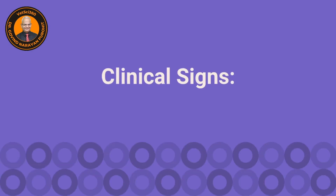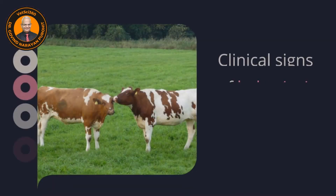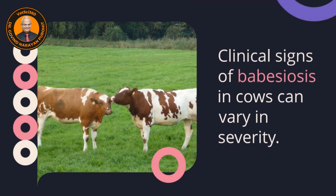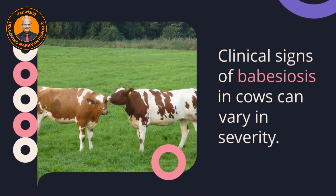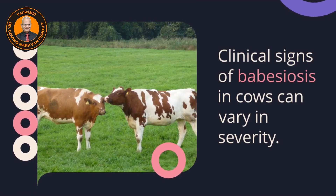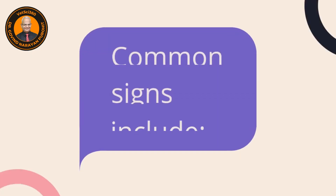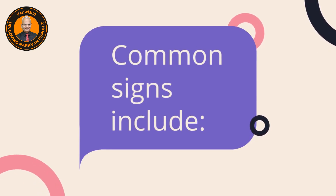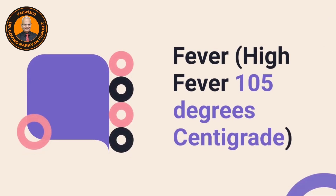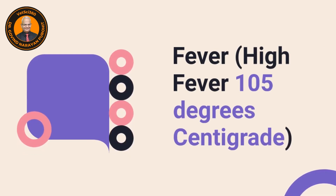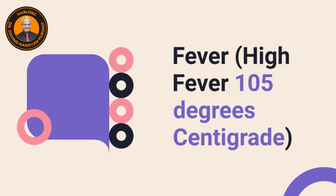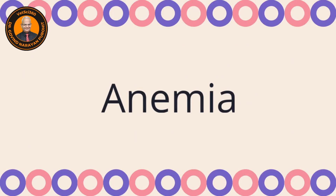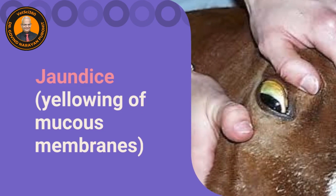The clinical signs of babesiosis vary in severity depending upon the extent of the disease the organism has caused. Common signs include high fever up to 105–106 degrees, the animal being down, and most of the time the owner notices it because of hematuria or hemoglobinuria. The animal also has anemia.